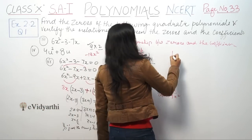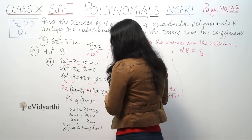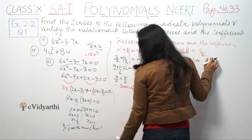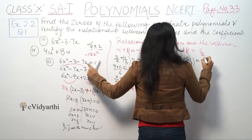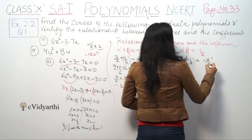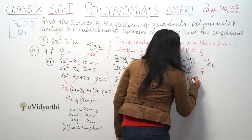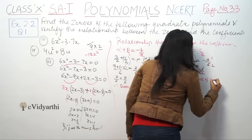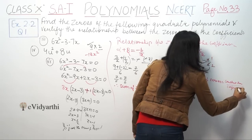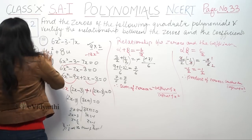Same way, we check the product of zeros, which is alpha times beta equal to c by a. Alpha is 3 by 2 and beta is minus 1 by 3. Their product is minus 3 by 6, which simplifies to minus 1 by 2. And c by a is minus 3 by 6, which also equals minus 1 by 2. So the product of zeros equals the constant term upon the coefficient of x squared.